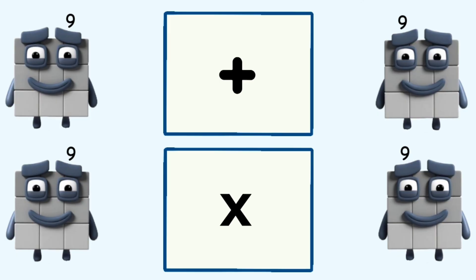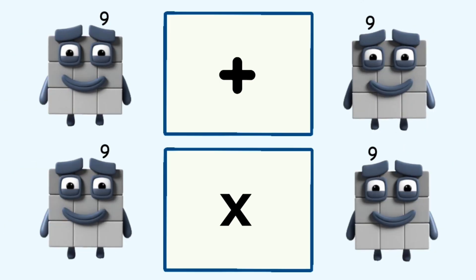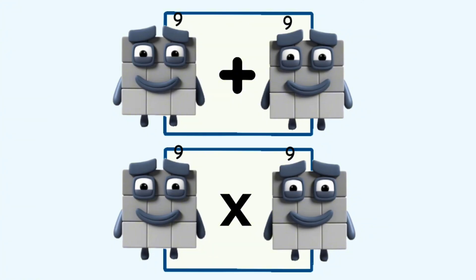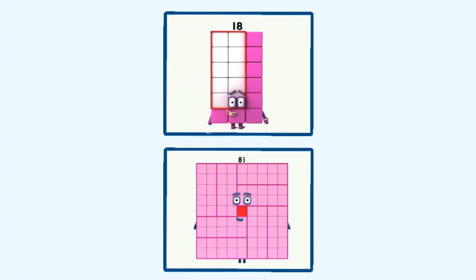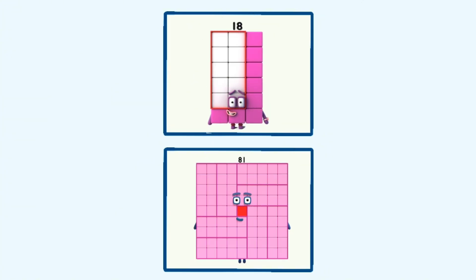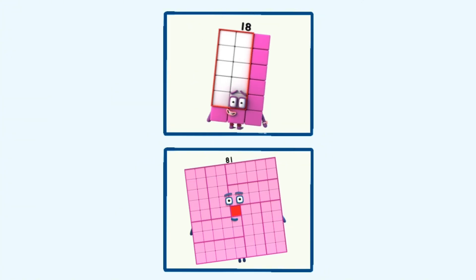9 plus 9 and 9 times 9 equals 18 and 81.